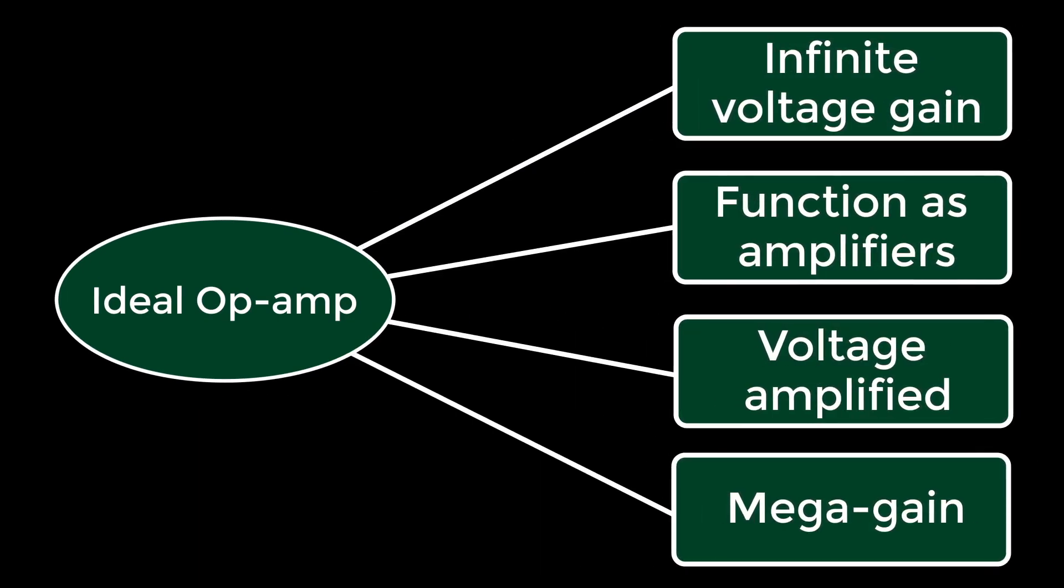Op-amps are devices that many times are used to function as amplifiers. A voltage is input into the op-amp and as output, it produces the voltage amplified. An ideal op-amp will produce mega gain.